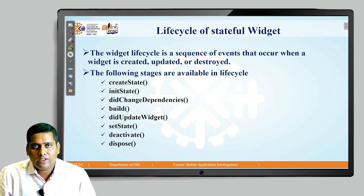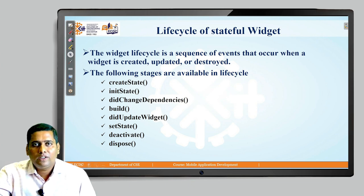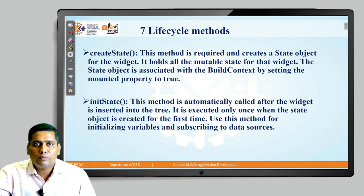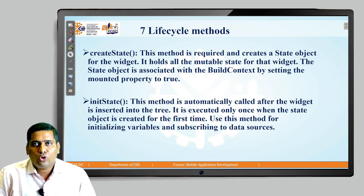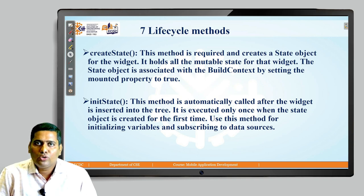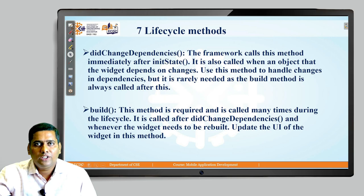The lifecycle methods are: createState, initState, didChangeDependencies, build, didUpdateWidget, setState, deactivate, and dispose. The createState method is required and creates the state object for a widget; it holds all mutable state for that widget and the state object is associated with its build context by setting the mounted property to true. The initState method is automatically called after the widget is inserted into the tree, executed only once when the state object is created for the first time; use it for initializing variables and subscribing to data sources.